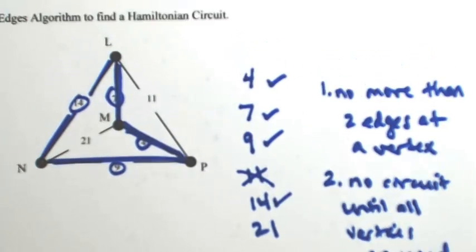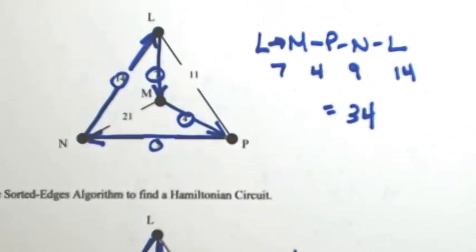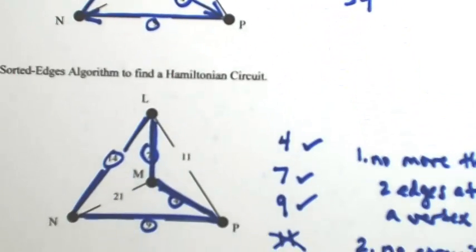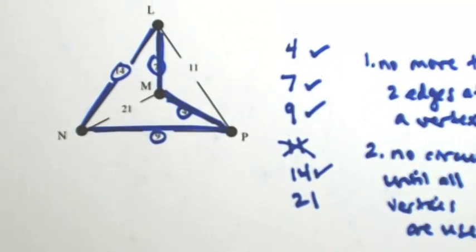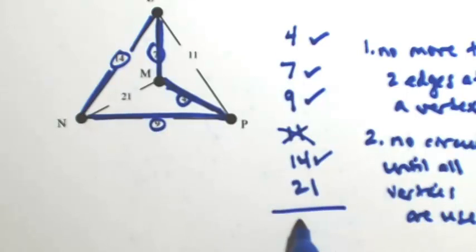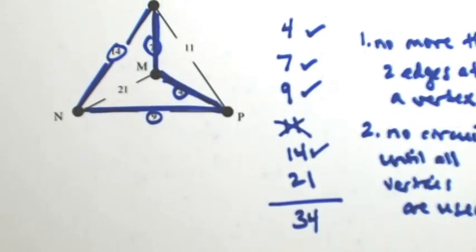Okay, so if you look at the one we just did with the nearest neighbor algorithm, we actually ended up with the same one. That's not always true. That won't always happen. But in this case, it did. So this cost would have been 34 as well. Thank you.